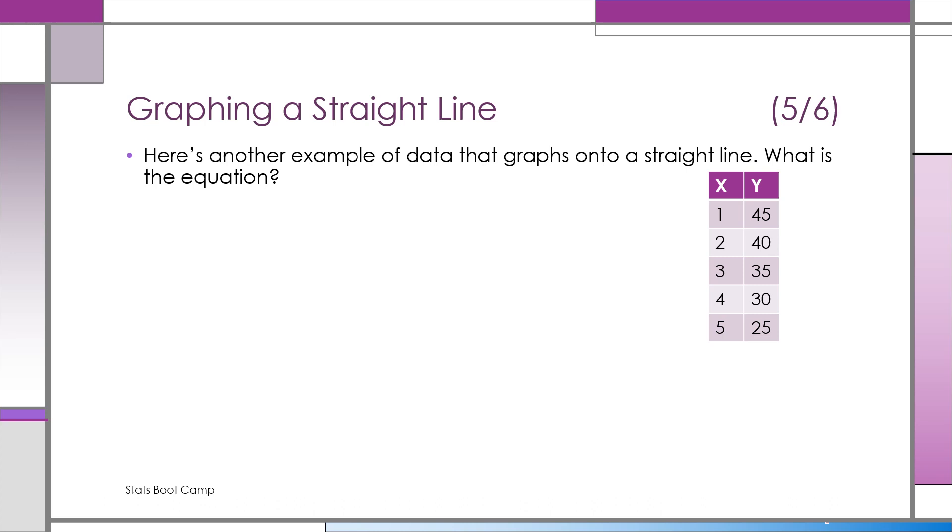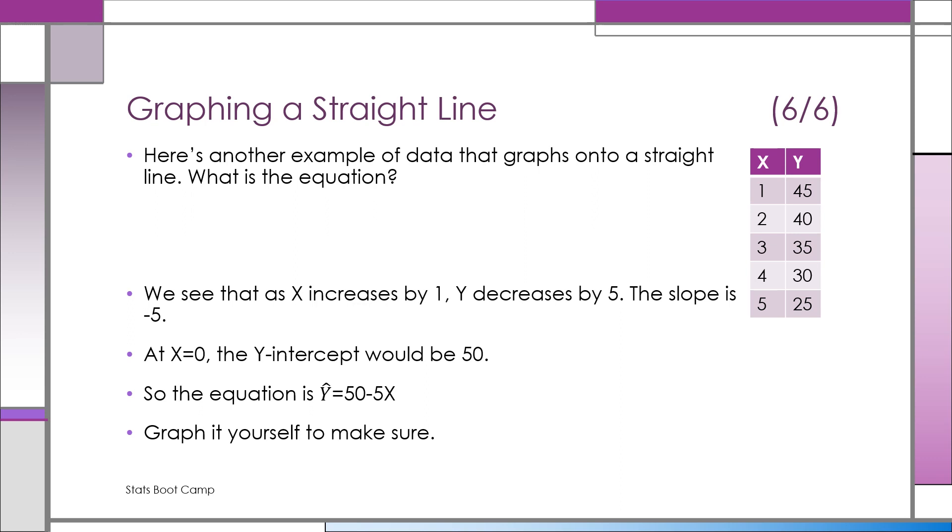We see that as X increases by 1, each time Y decreases by 5. So the slope is negative 5. This is an inverse relationship between X and Y.